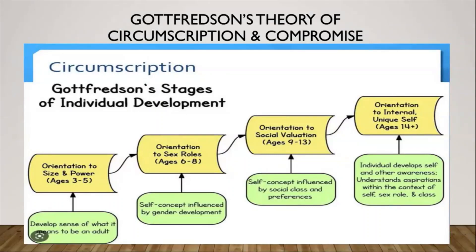At this stage, children start to realize what gender roles are laid out for them in their communities and environment. Children focus on external observable characteristics like gender and gender roles, and jobs they don't feel fit a specific gender role they may eliminate from their interests. For example, when I was younger I thought it was weird to see a male nurse — I always considered females to be nurses and males to be doctors. But as I grew, I understood that any gender could be a nurse or a doctor.